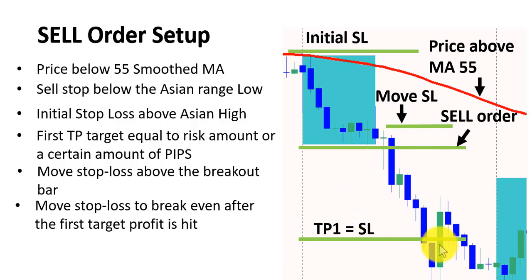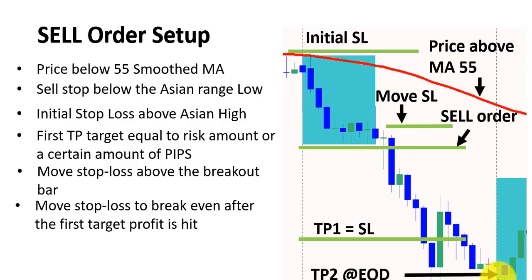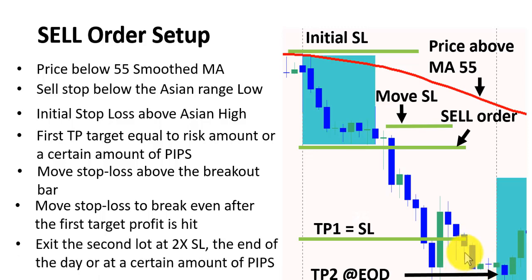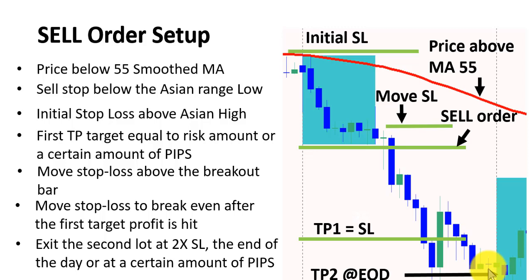Now, if you hit your TP1, what you need to do again is protect yourself even further — move your stop to break even, from above the breakout candle to your entry point. It means your TP2, whatever happens to the second part of your trade, you can never lose anymore because you have protected yourself against any losses. As we said before, for TP2 you can either close it at the end of the day, use twice your stop loss — so if the stop loss is 20 pips, TP2 could be 40 pips — or use a specific number of target pips.